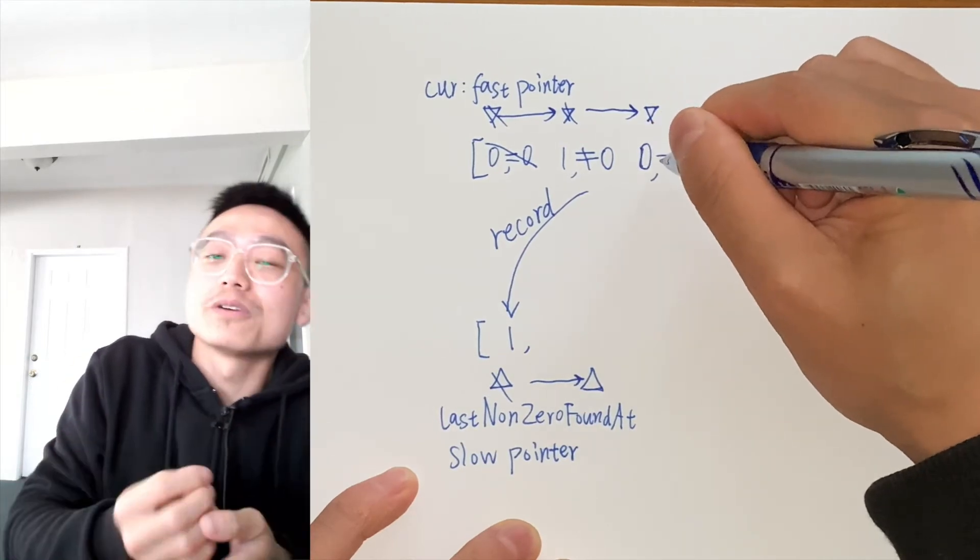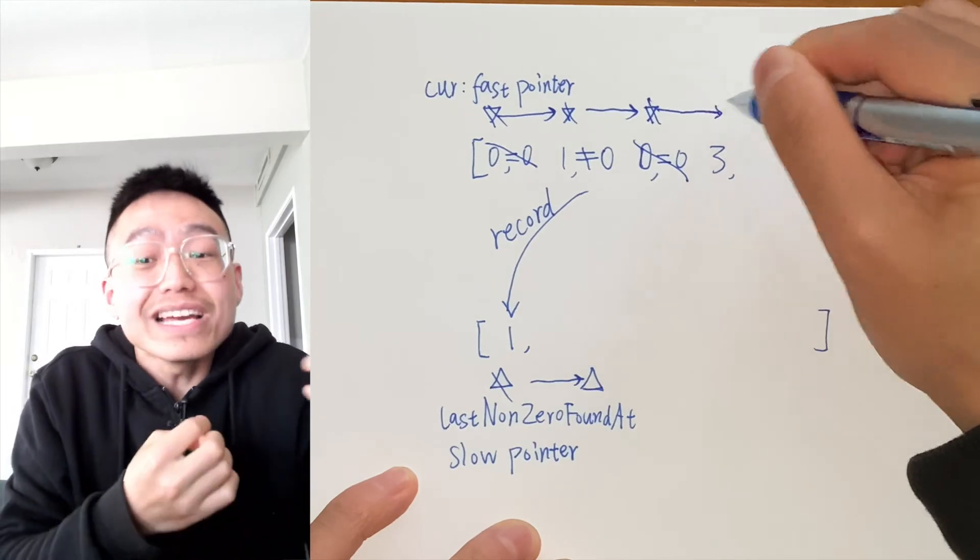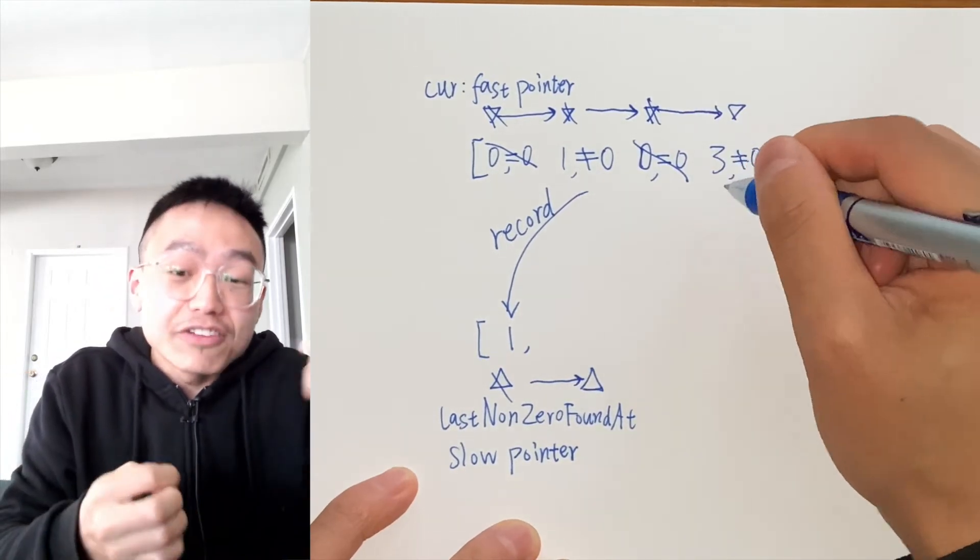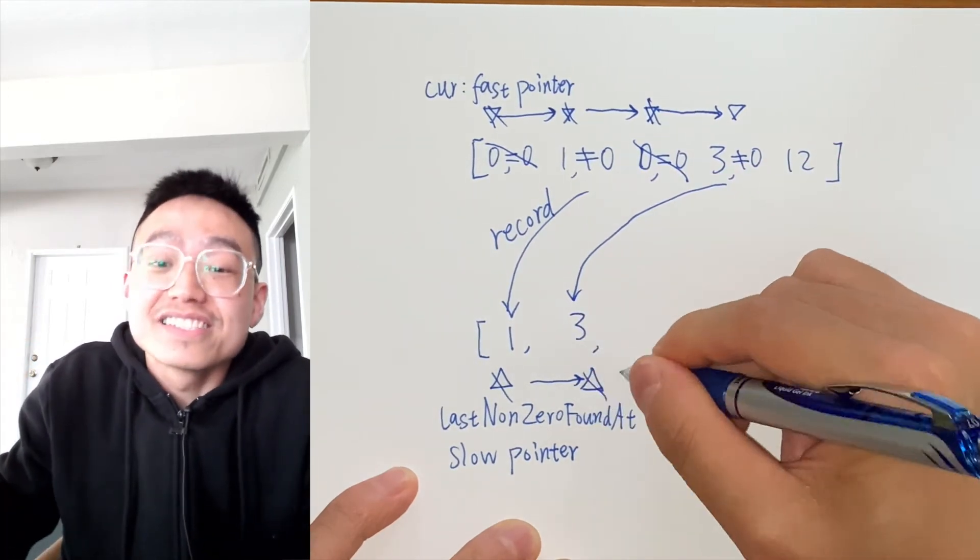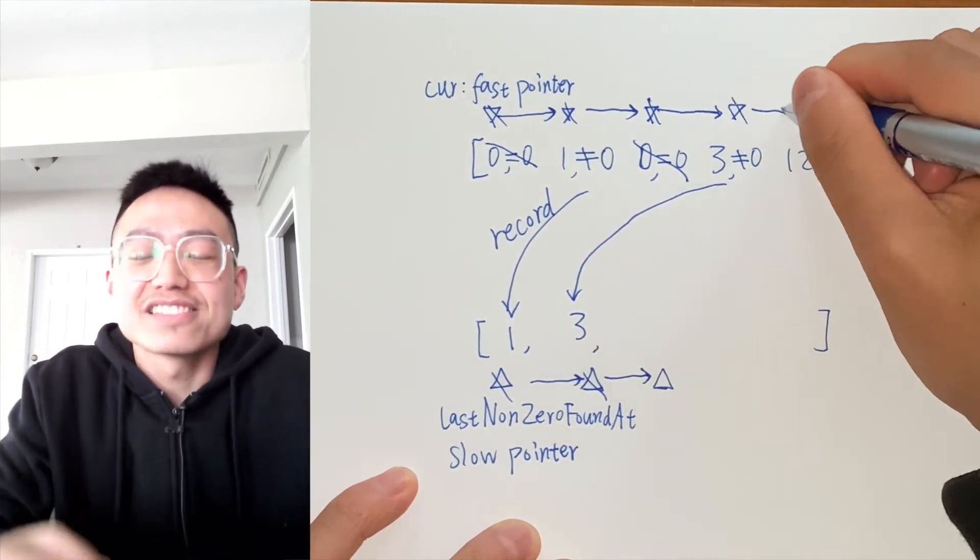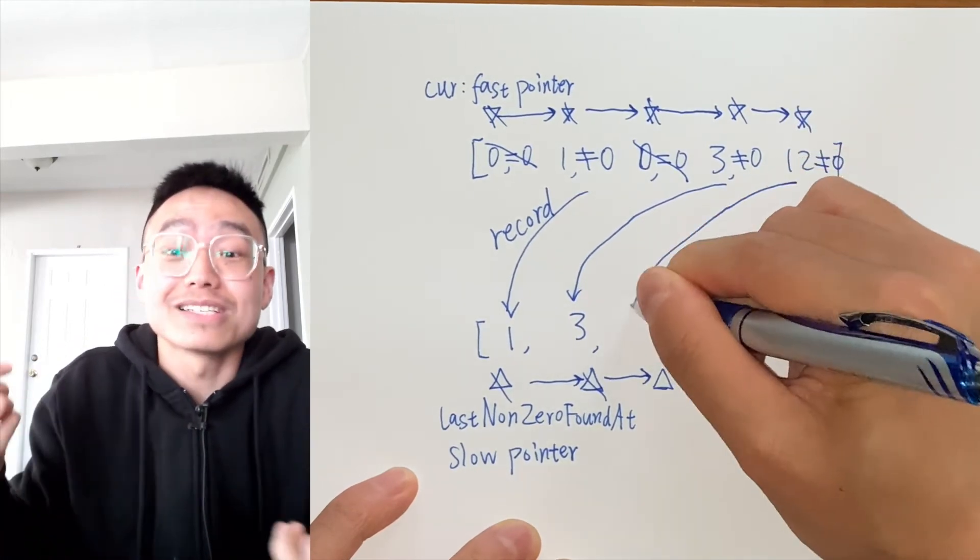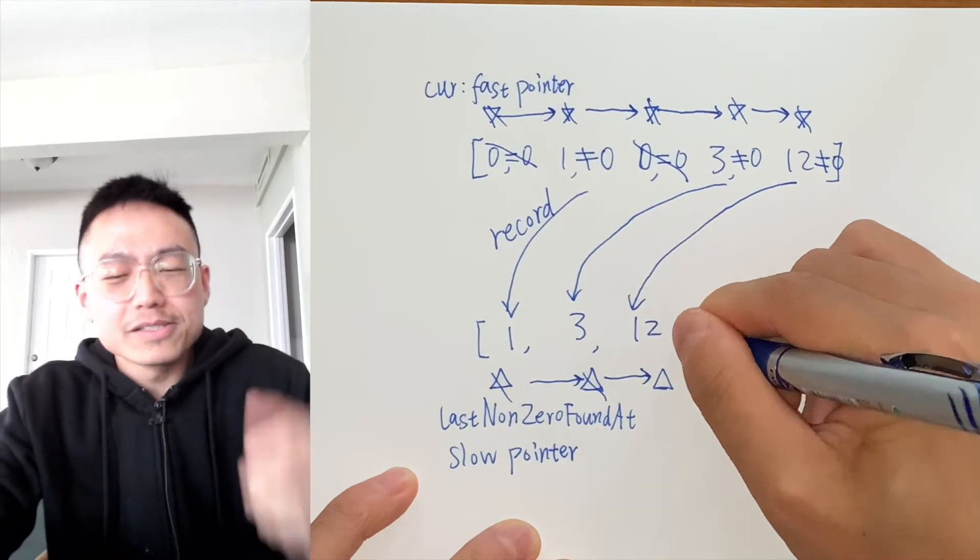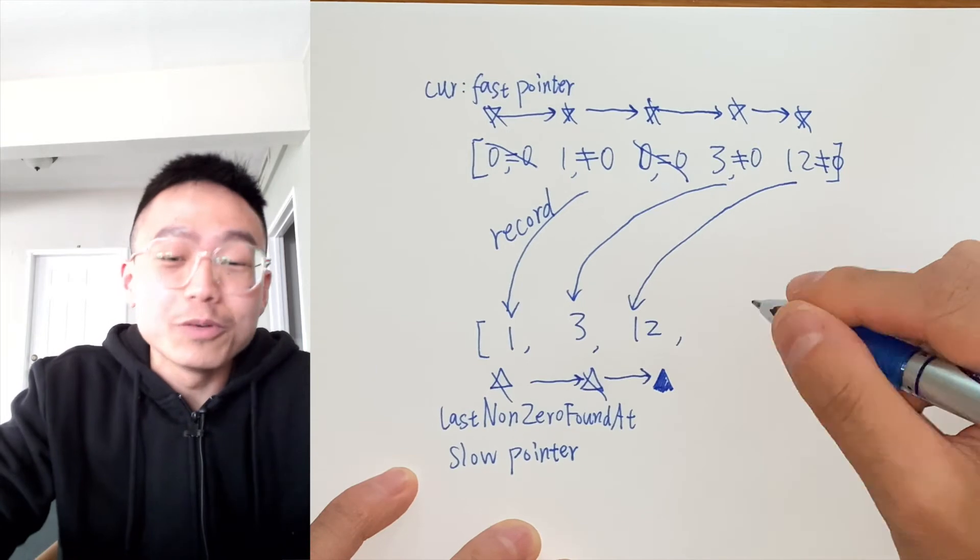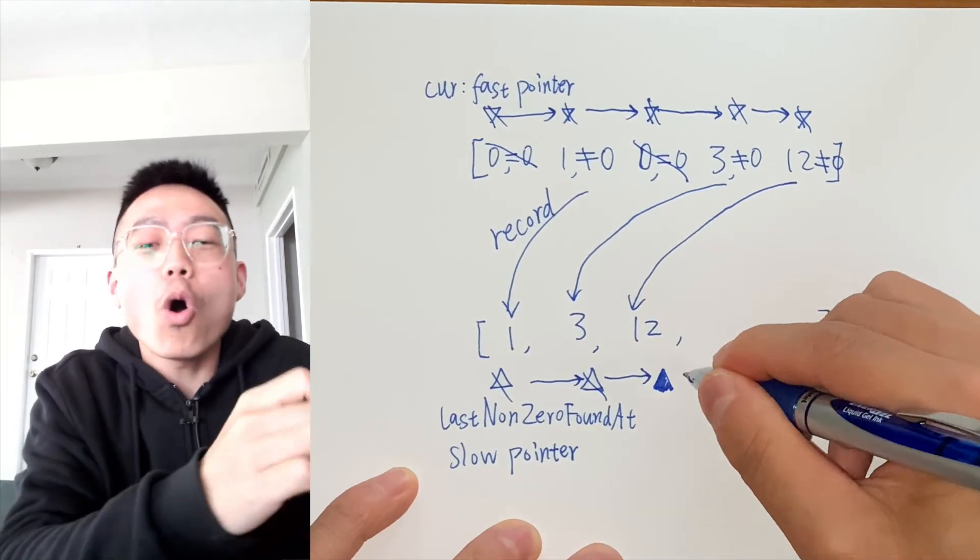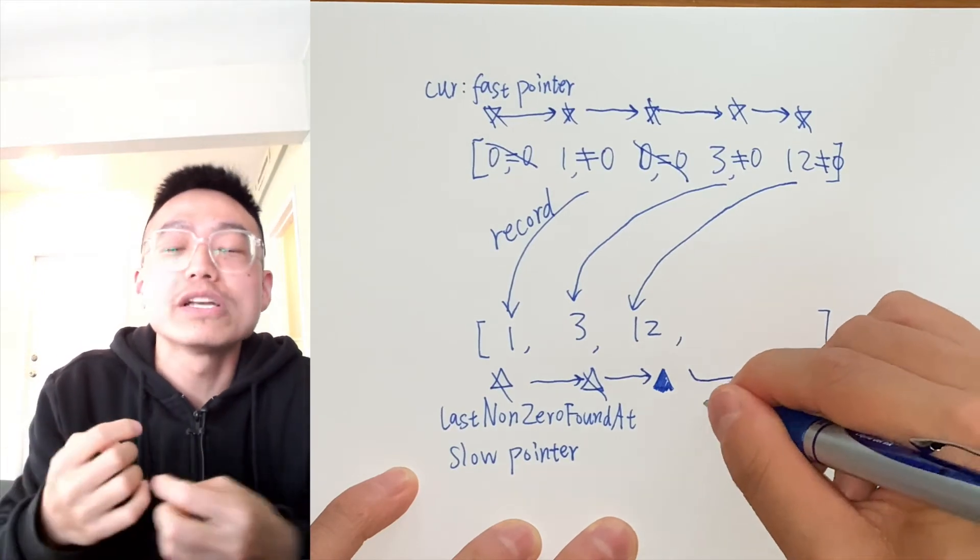As we keep finding new non-zero elements, we just overwrite them at the lastNonZeroFoundAt plus one index. This overwrite will not result in any loss of data because we already processed what was there. If it were non-zero, it is now written at its corresponding index. Or if it were zero, it will be handled later in time.